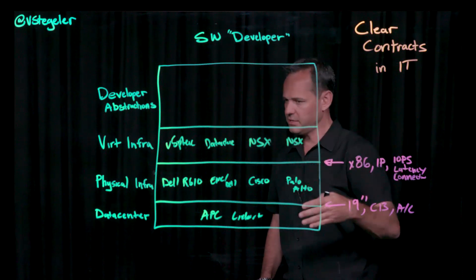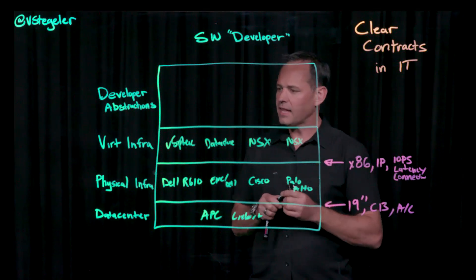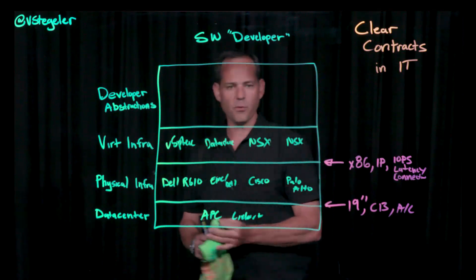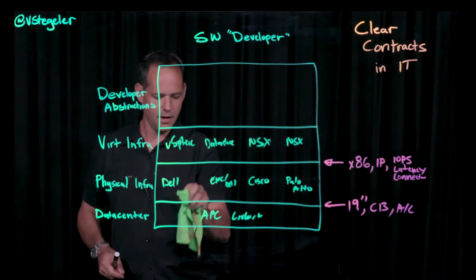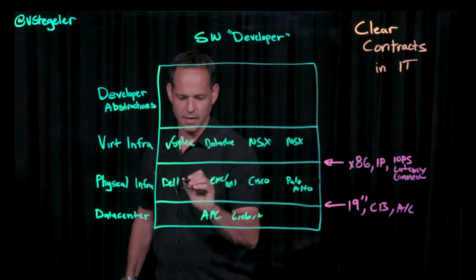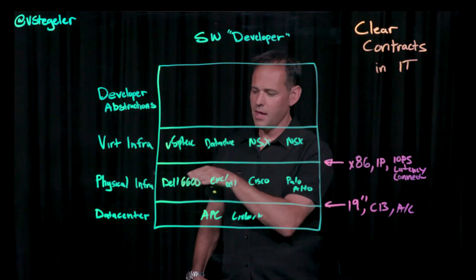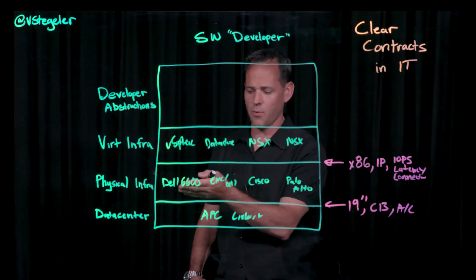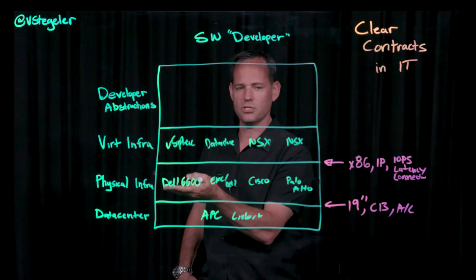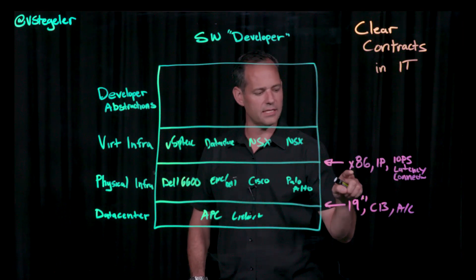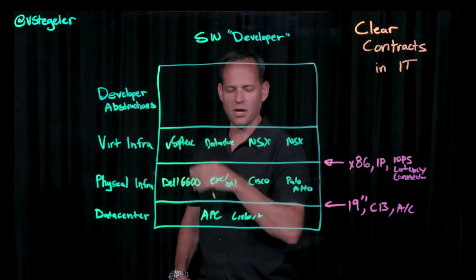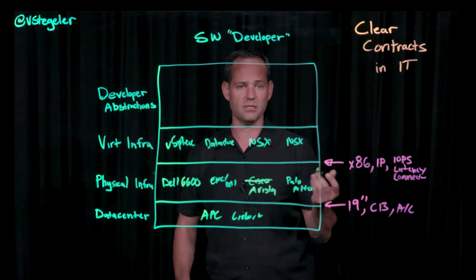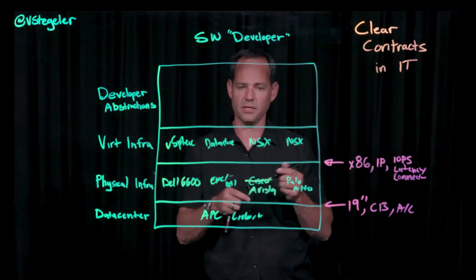If I have clear contracts here, that allows these different teams to operate independently of each other. For example, what if I wanted to change out my server to the next Dell server — say the Dell 6600 — which has eight sockets and 192 gigs or terabytes of RAM? I'm able to change to that server because I haven't changed the contract parameters: x86 and IP connectivity. As long as it's on the vSphere qualification matrix, you're good to go. Or maybe I want to swap out Cisco for Arista for switching, because Arista provides the same type of IP connectivity to support NSX — I'm good to go.